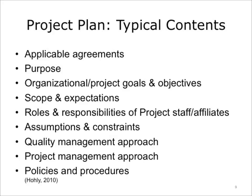A typical project plan formalizes the following: agreements between the employer, the project team, contractors, and anyone else affiliated with the project; the project's primary purpose; organizational, institutional, and project goals and objectives as to their relationship to the project's outcomes; scope and expectations; roles and responsibilities of project staff affiliates; assumptions and constraints; quality management approach; project management approach; and policies and procedures that must be adhered to for the project's success.